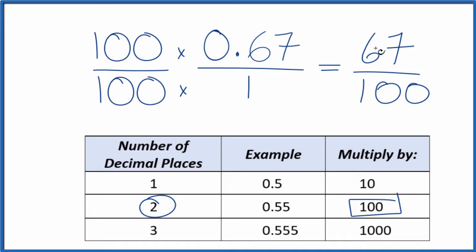We can't simplify this any further. If you divide 67 by 100, you'll get 0.67. This is Dr. B, thank you.